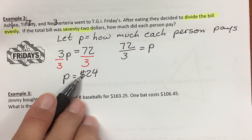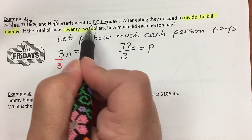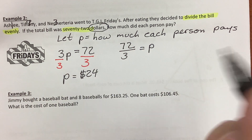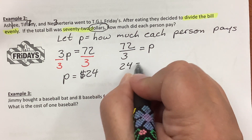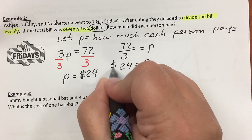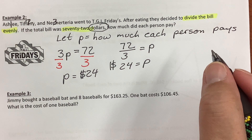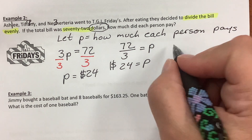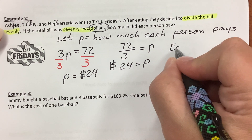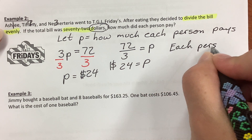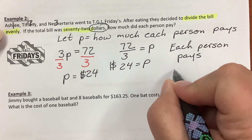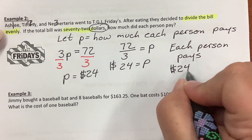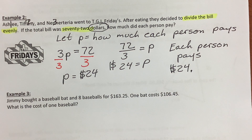I'm putting a dollar sign because it says $72 — I need dollars. 72 divided by 3 is $24, so $24 equals P. Write a sentence: each person pays $24. Capitals, periods — happy teachers.